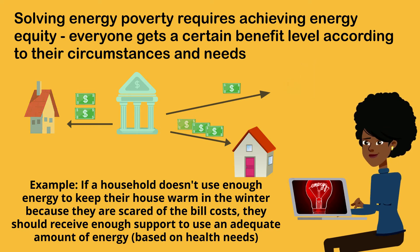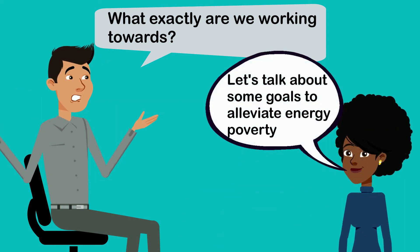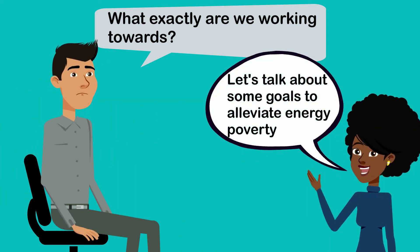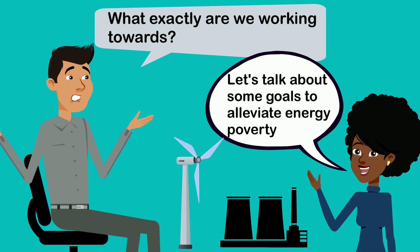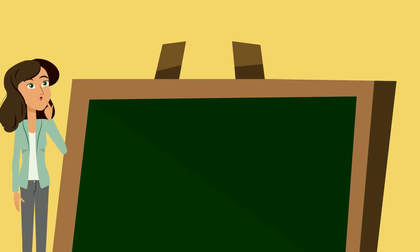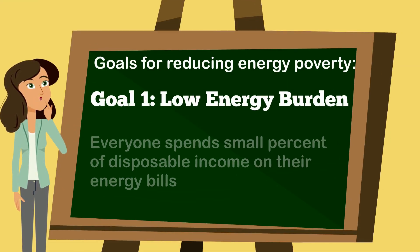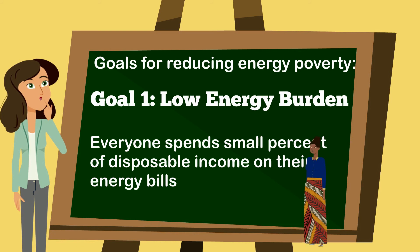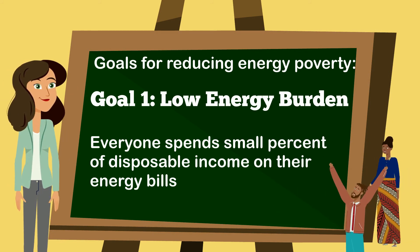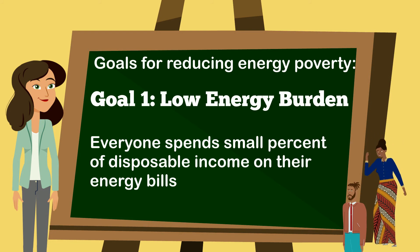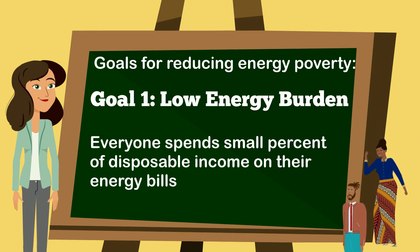So what exactly are we working towards? Let's talk about some goals to alleviate energy poverty. Goal one could be to have a low energy burden, meaning everyone spends a small percent of their disposable income on their energy bills.